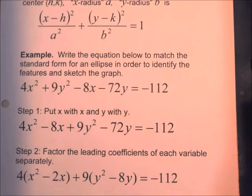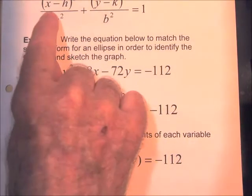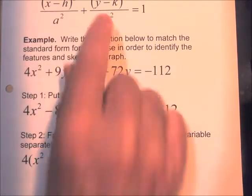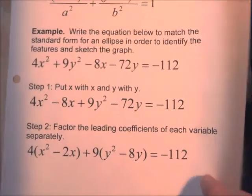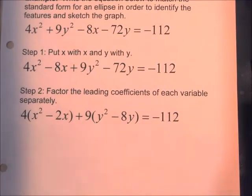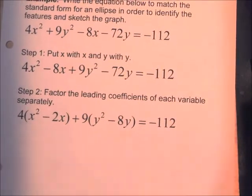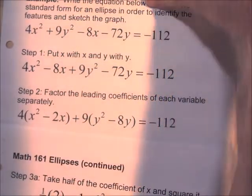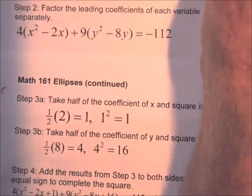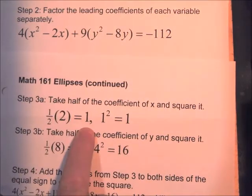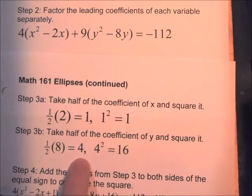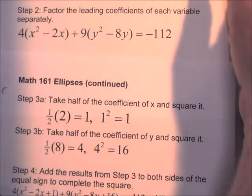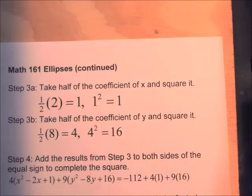The next goal is to make each grouped expression into something squared, since the standard form has a squared binomial for both x and y. To do this we complete the square: take half the coefficient of x — half of 2 is 1, and 1 squared is 1 — and half the coefficient of y — half of 8 is 4, and 4 squared is 16. We will add those numbers inside the parentheses to create perfect squares.